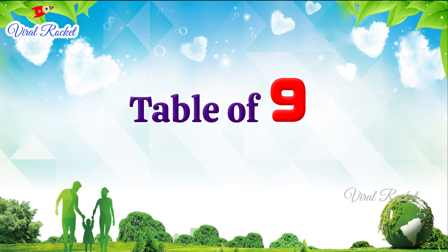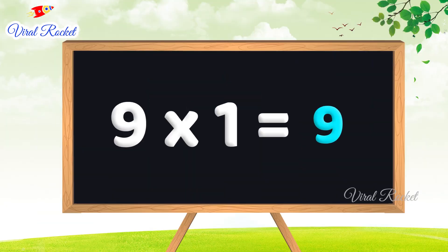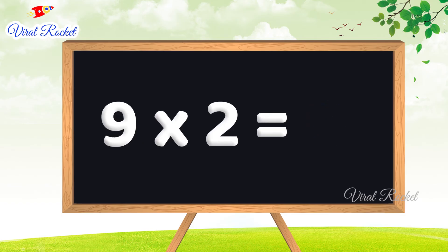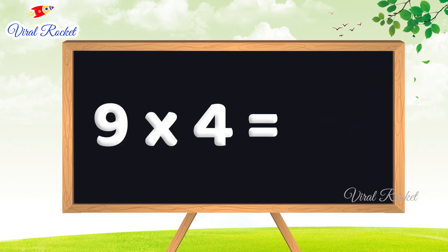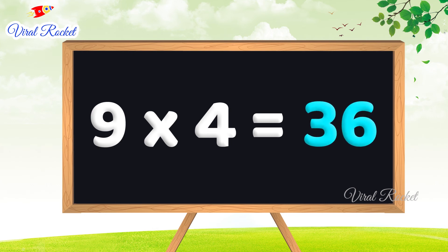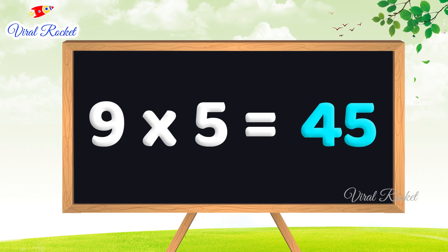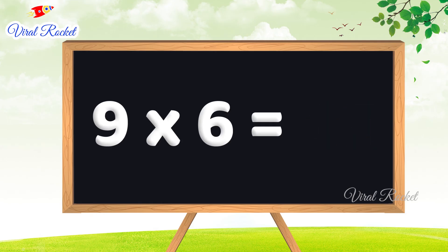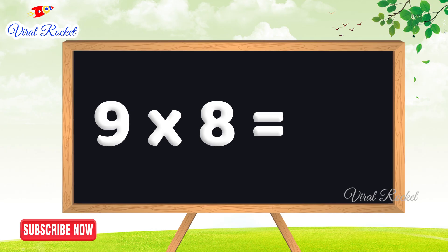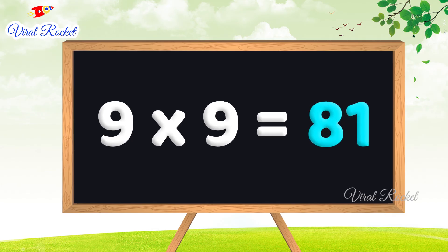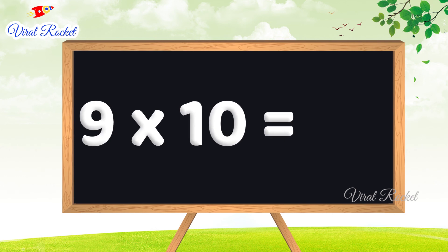Table of nine. Nine one's are nine, nine two's are eighteen, nine three's are twenty-seven, nine four's are thirty-six, nine five's are forty-five, nine six's are fifty-four, nine seven's are sixty-three, nine eight's are seventy-two, nine nine's are eighty-one, nine ten's are ninety.